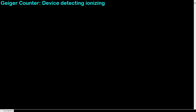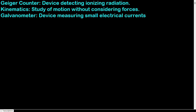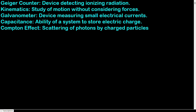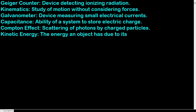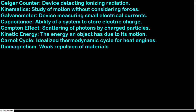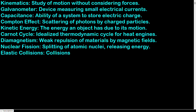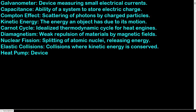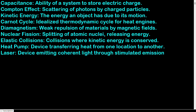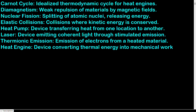Geiger counter: device detecting ionizing radiation. Kinematics: study of motion without considering forces. Galvanometer: device measuring small electrical currents. Capacitance: ability of a system to store electric charge. Compton effect: scattering of photons by charged particles. Kinetic energy: the energy an object has due to its motion. Thermionic emission: emission of electrons from a heated material.